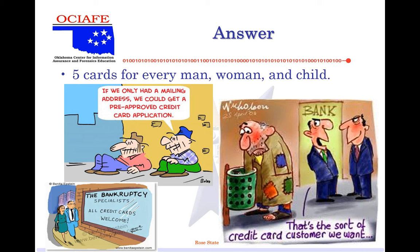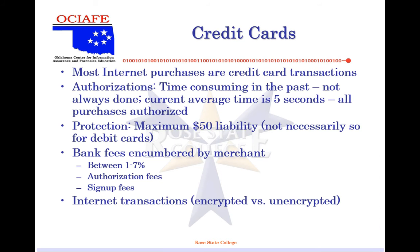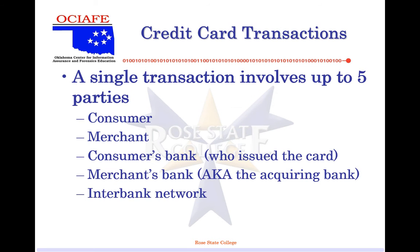As of a couple years ago, there was an average of 5 cards for every man, woman, and child in the United States. Most internet purchases are credit card transactions. A single transaction goes up to five different places: consumer, merchant, consumer's bank, merchant's bank, and the interbank network.